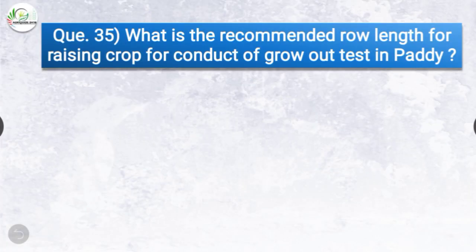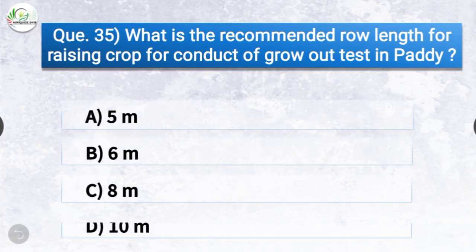Question number thirty-five: What is the recommended row length for raising crop for conduct of grow-out test in paddy? The options are 5 meter, 6 meter, 8 meter, or 10 meter. The correct answer is option B — 6 meter. Six meters is the recommended row length for raising crop for conduct of grow-out test in paddy.